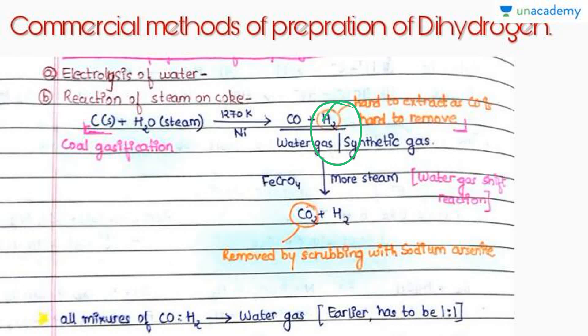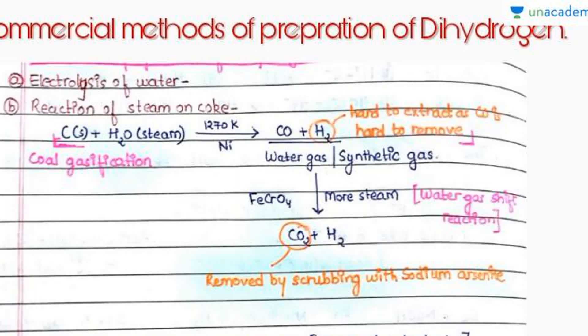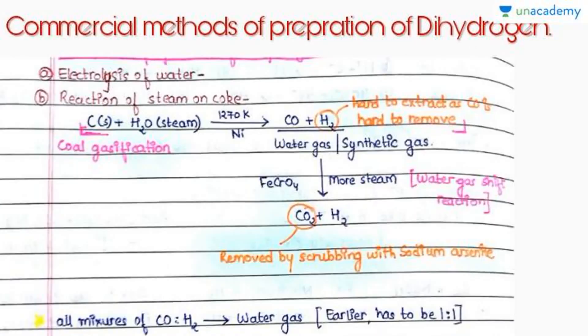Now the carbon monoxide won't let hydrogen gas escape because carbon monoxide would be very hard to remove. So what we do here is we pass more steam in the presence of iron chromate at high temperature, and then it becomes CO2 and we can easily remove it by scrubbing it with sodium arsenide.